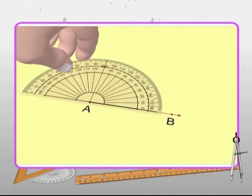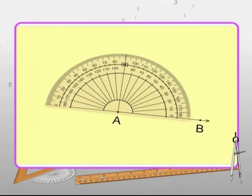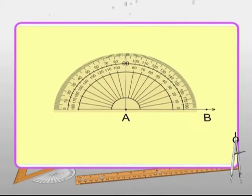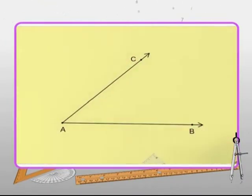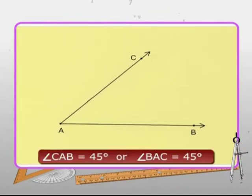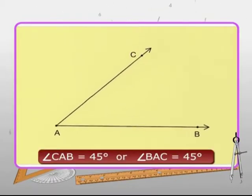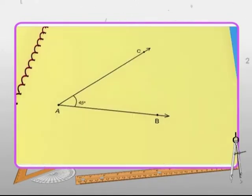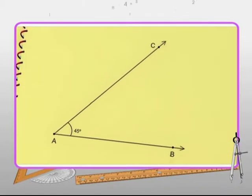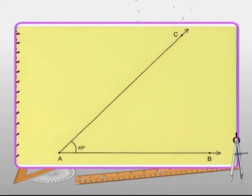ray AB points towards the zero degree of the inner scale. Hence, locate the given degree, i.e. 45 degrees on inner scale and mark it as C. Join point C to point A to draw the ray AC. On joining, angle CAB or angle BAC is formed that measures 45 degrees. An important point to remember is that the length of the arm of the angle does not affect the measure of the angle.